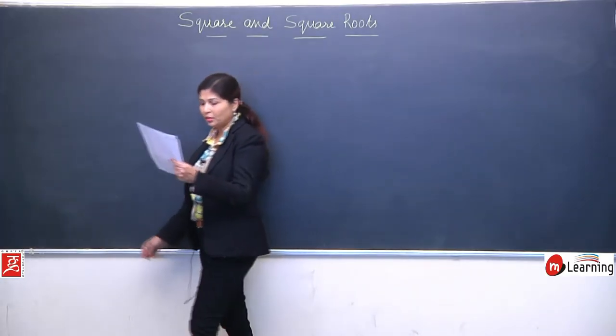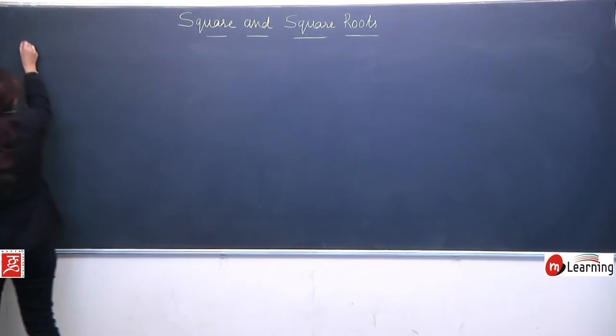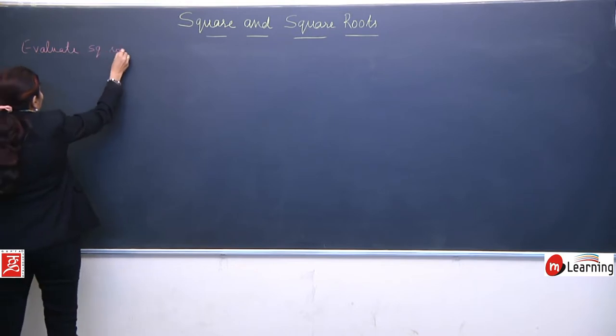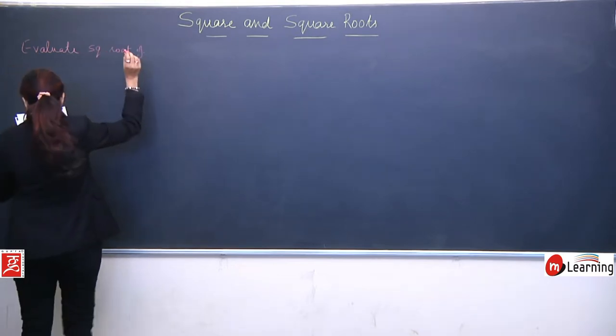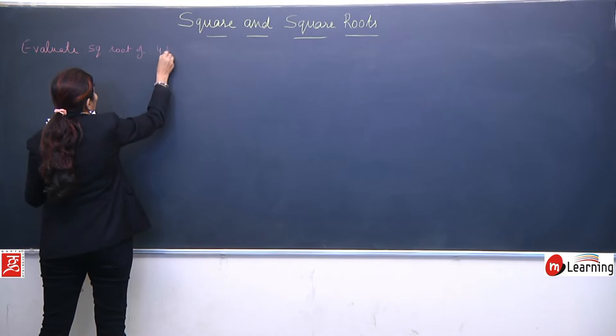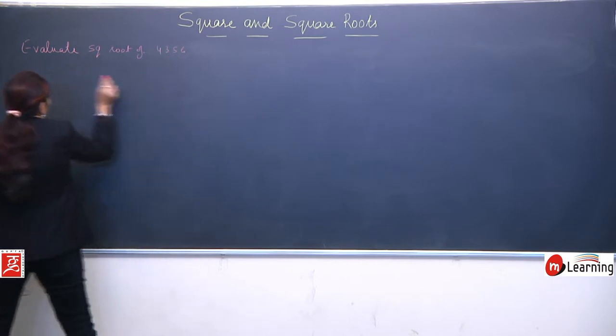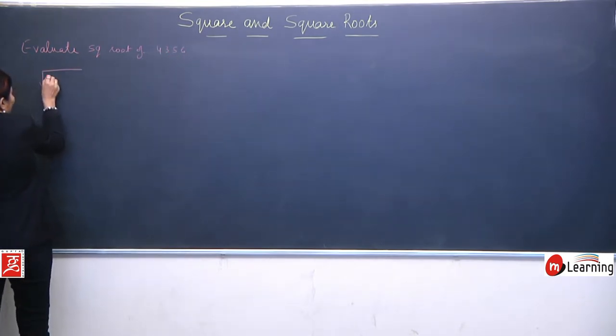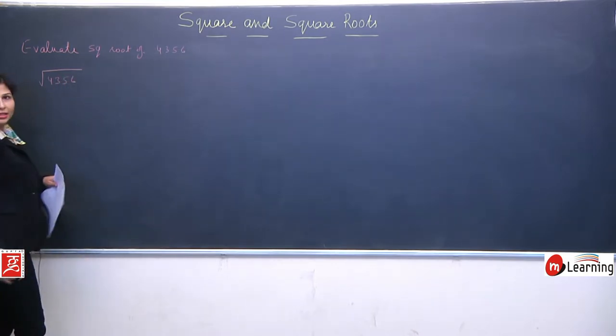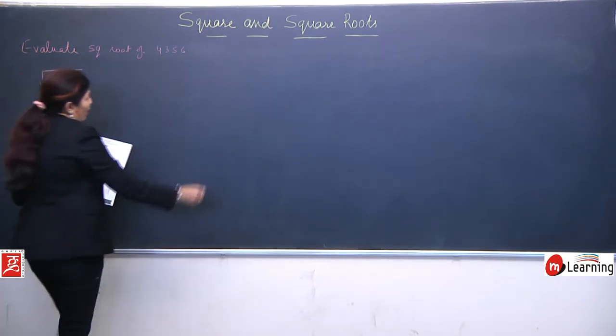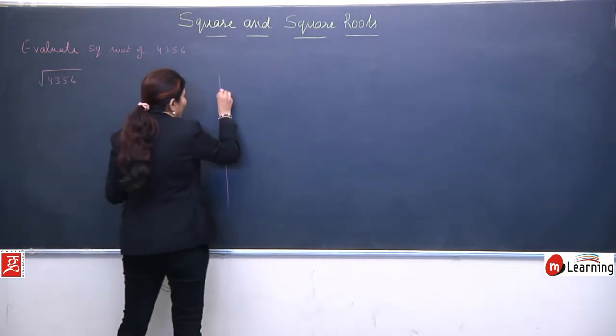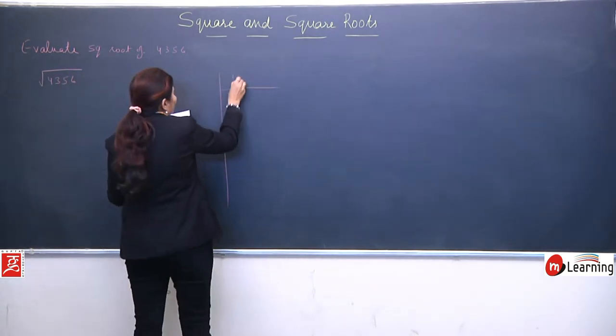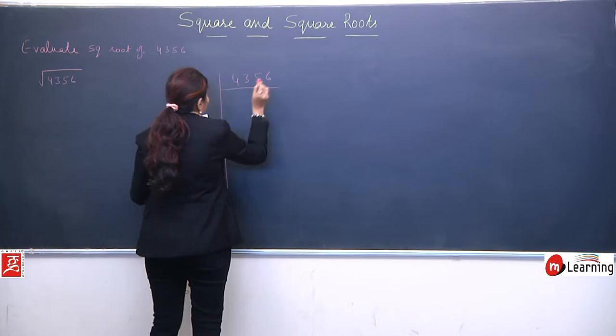My next example is evaluate square root of 4356. Your question can automatically convert in this form. We need to find its square root. Again the same procedure, we will factorize using prime factorization method for 4356.